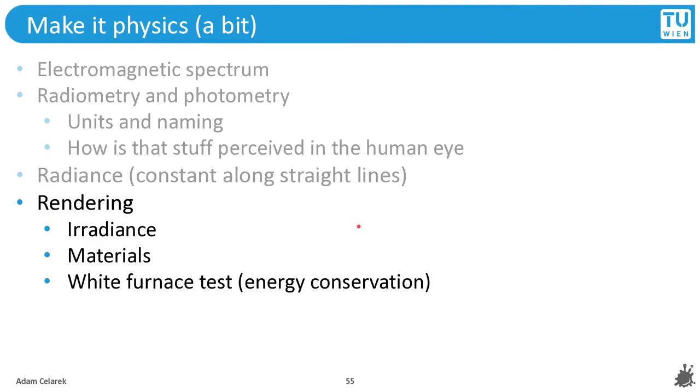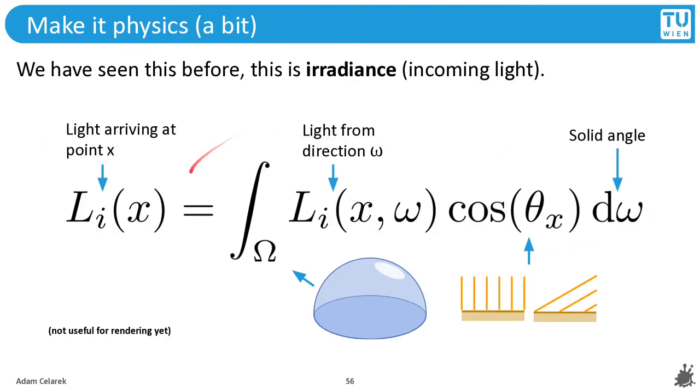We will now cover some more physics that we will need later for rendering. Irradiance is the incoming light. We've basically seen before, but we will have a brief repetition. Then we will take a look at materials, but just very briefly. And we will see what the white furnace test is. It's a test for energy conservation and it is also very important. So this is what we saw before: the integral of the hemisphere. We test all directions, we take the cosine into consideration and the solid angle. This is an integral of the incoming light. It gives us the amount of light that is received by a certain surface point.